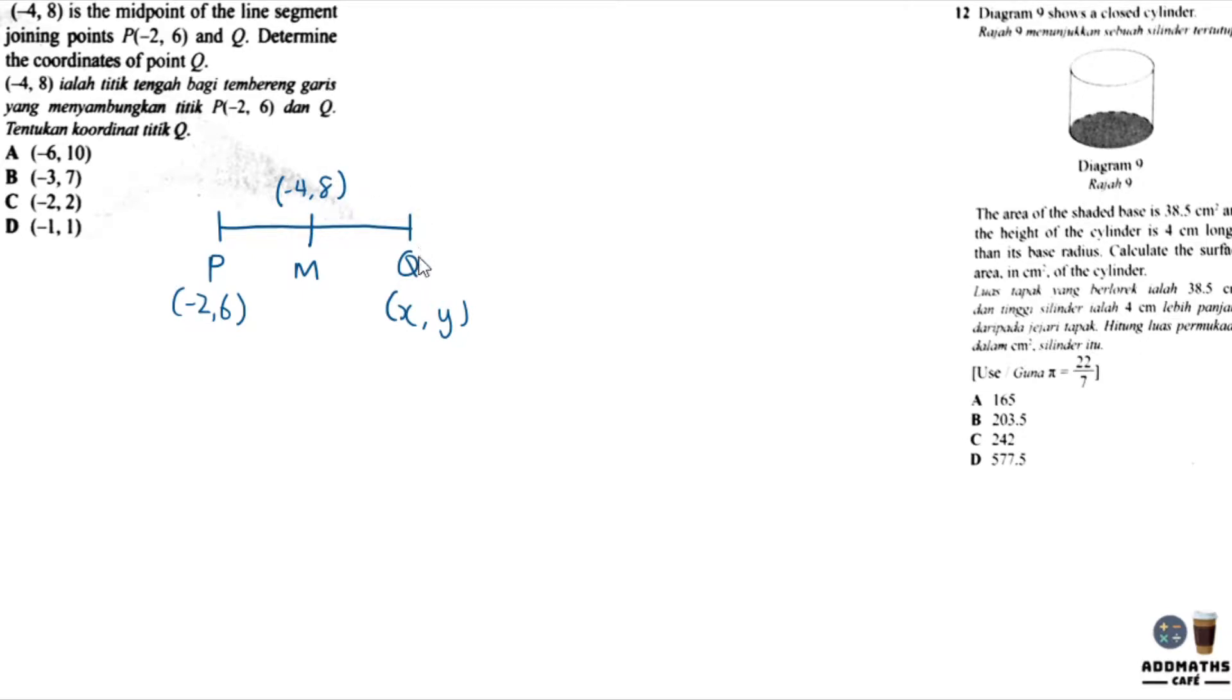So how should I find the coordinate of Q? We know that midpoint is x1 plus x2 divided by 2 to get the midpoint. Same goes to y, y1 plus y2 divided by 2. In this case you know that the midpoint is negative 4 and 8. So to get the midpoint I use negative 2 plus x divided by 2, and same goes to y, 6 plus y divided by 2.